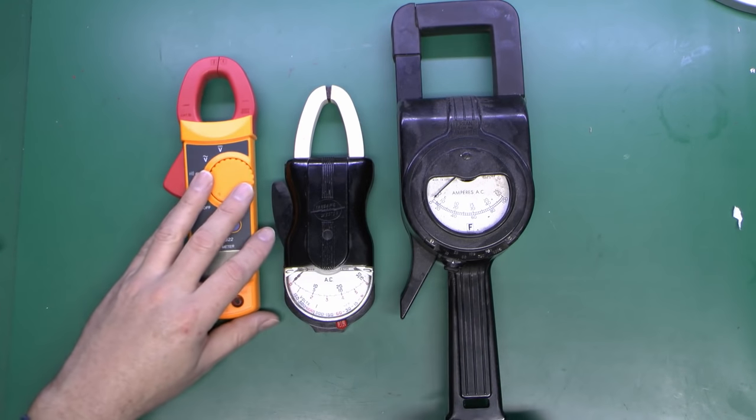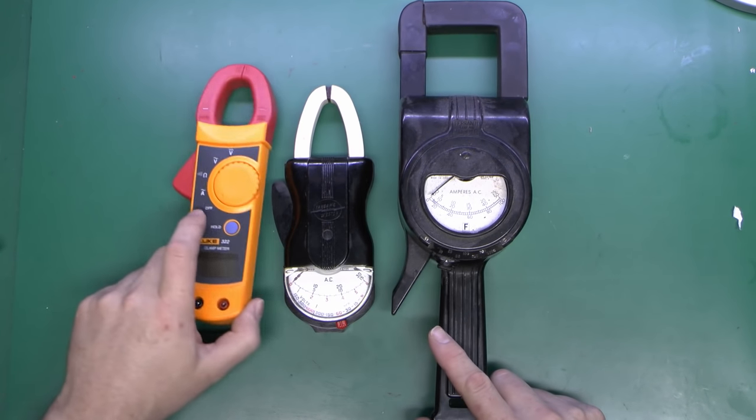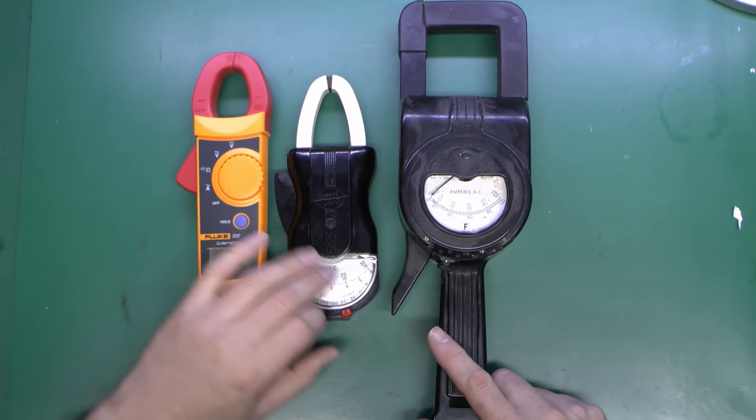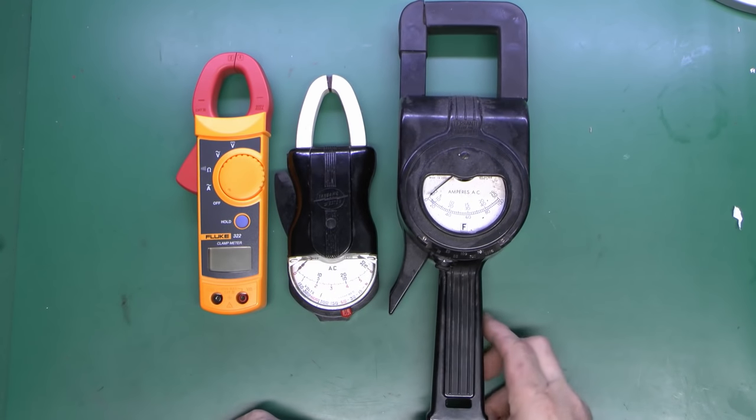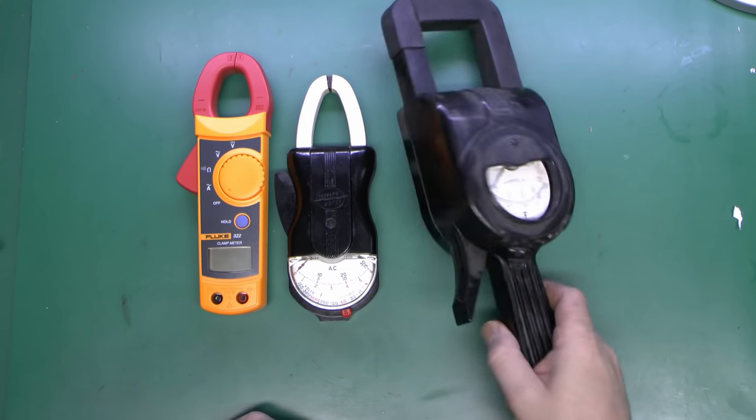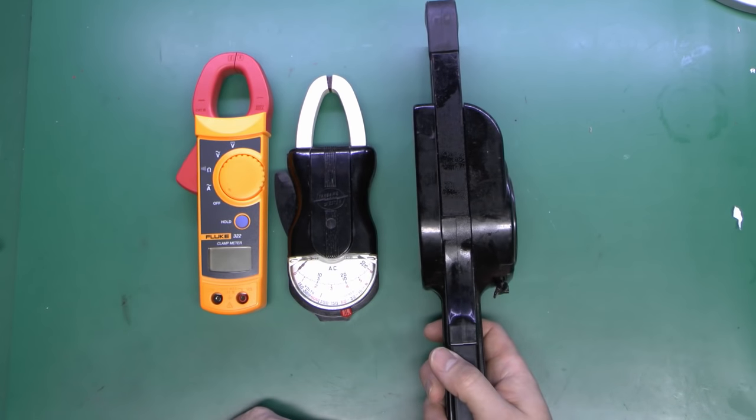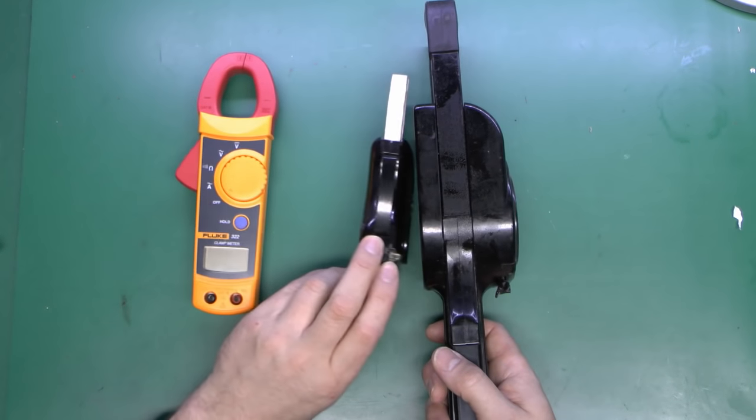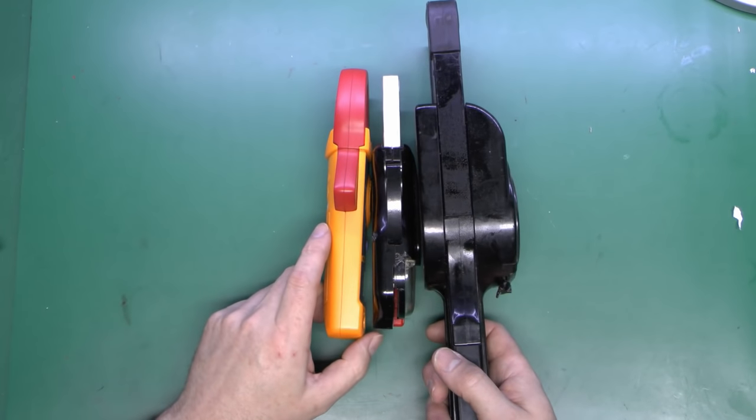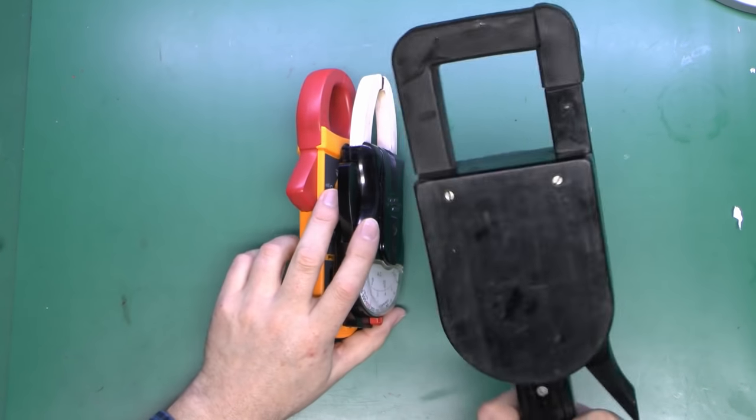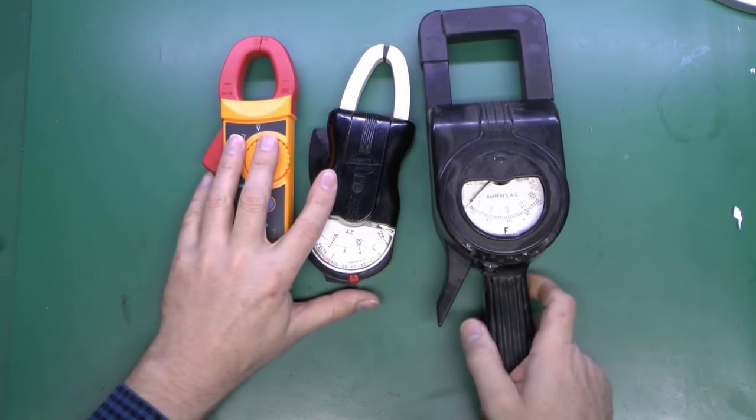So just looked at the three next to each other, the modern Fluke here, the Western Clipper which is actually slightly smaller, and this old Ferranti which of course is absolutely huge. And also just check out the huge thickness of this thing compared to the modern devices. This is a considerable amount of weight involved inside.